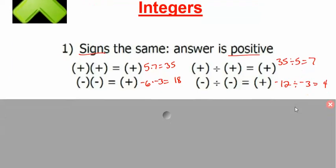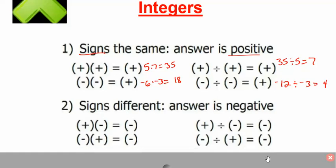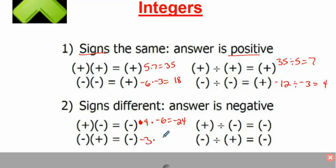If you have different signs, your answer is always going to be negative. So let's do 4 times a negative 6: 4 times 6 is 24, and you have a positive and a negative, so your answer is going to be negative. Same thing — negative 3 times a positive 7: 3 times 7 is 21, but you have a negative and a positive, so your answer is going to be negative.